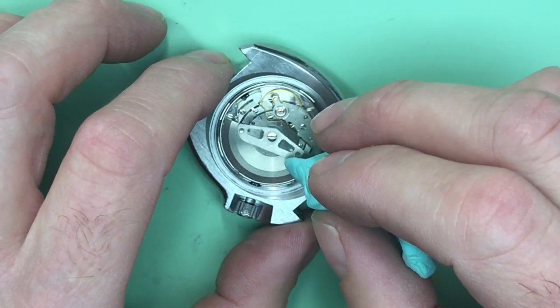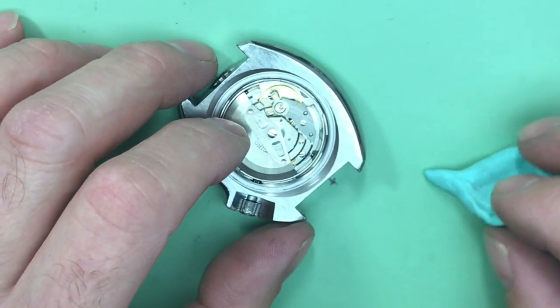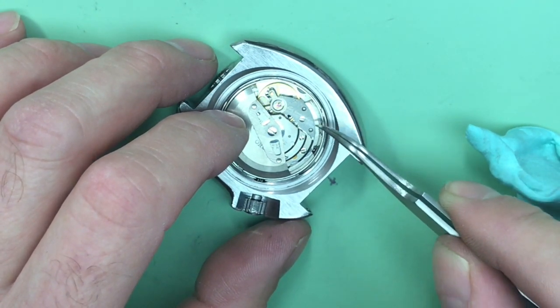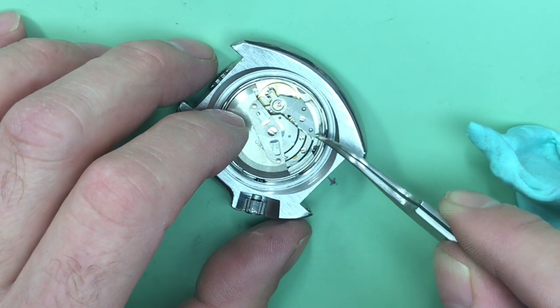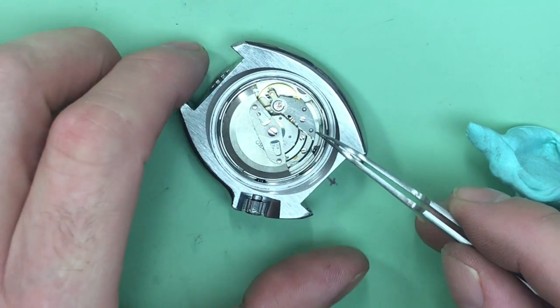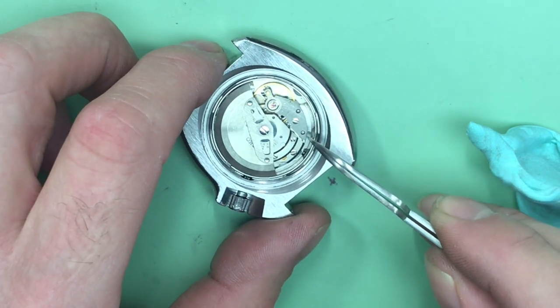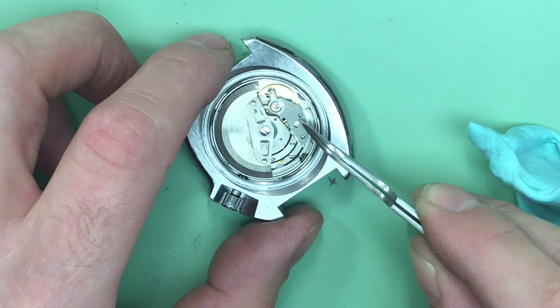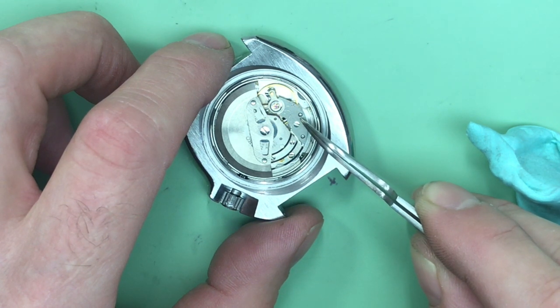But on your balance bridge here, your balance cock is what that's called, you notice that it doesn't have that chamfering. So what that tells me right away is that somebody has replaced this entire mechanism, this entire cock.